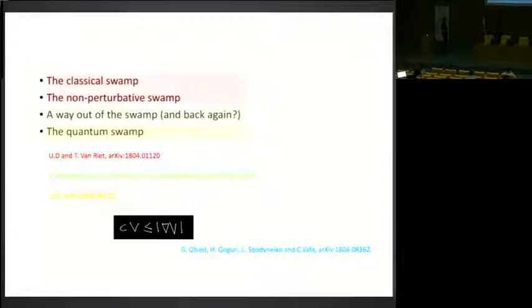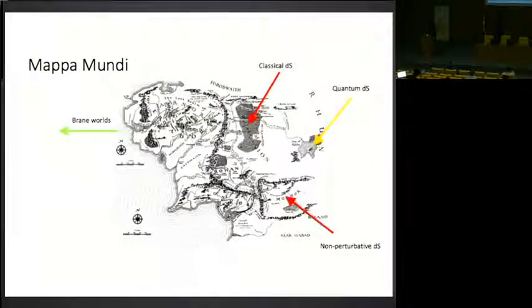Everything is circulating around the swampland conjecture, whether that is something that can actually be proven to be true or maybe something similar to it. Now, just to put some things into context, we have a map here of the world. Up there we have the classical de Sitter in the Mirkwood. And down here, we have the non-perturbative de Sitter down in Mordor and around the unexplored regions of Rune, we have what will come to the quantum swampland. And then the possibility of going west towards the brane worlds.